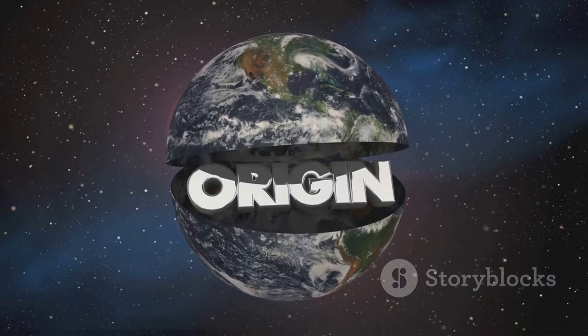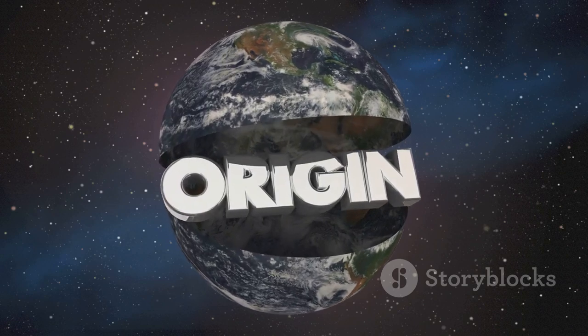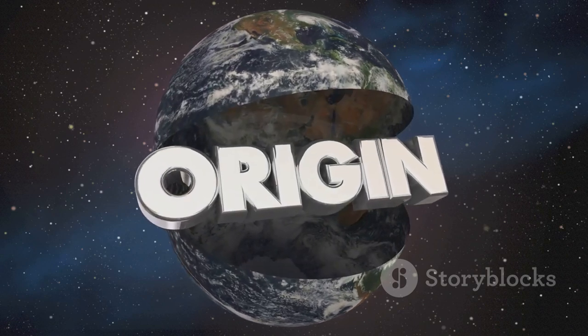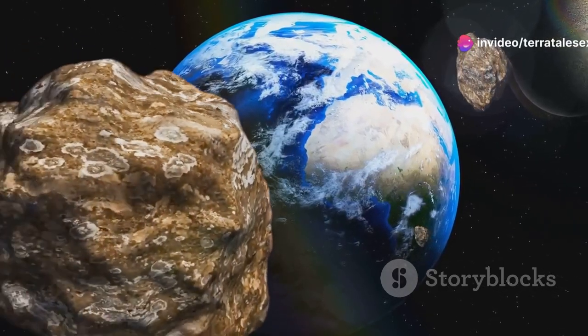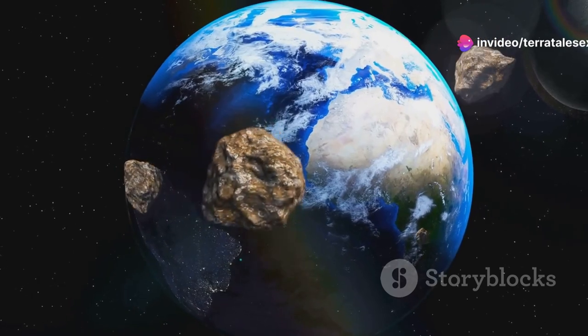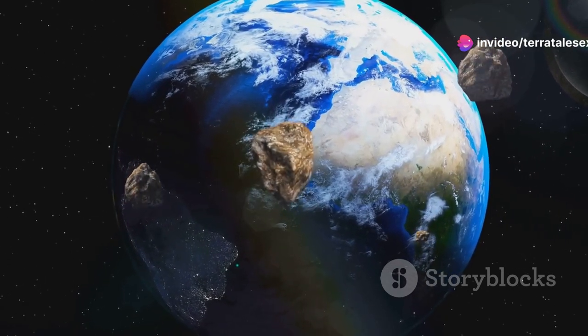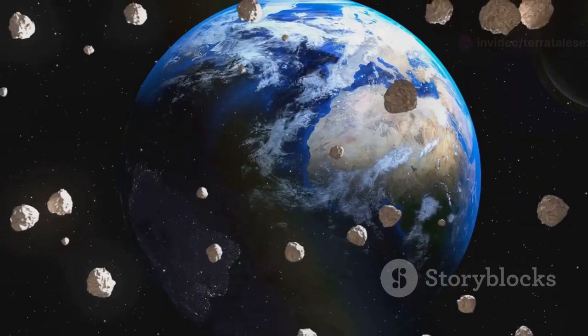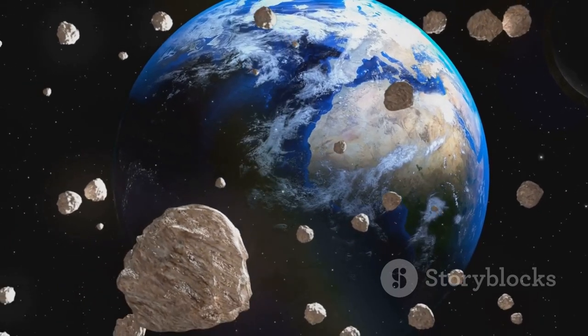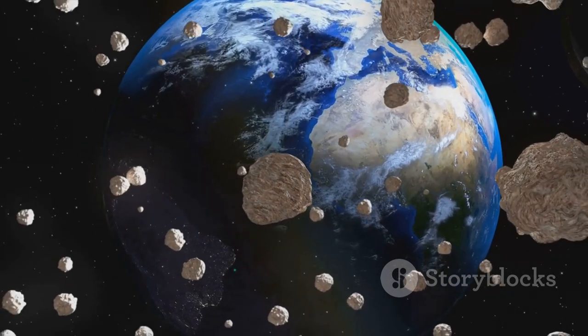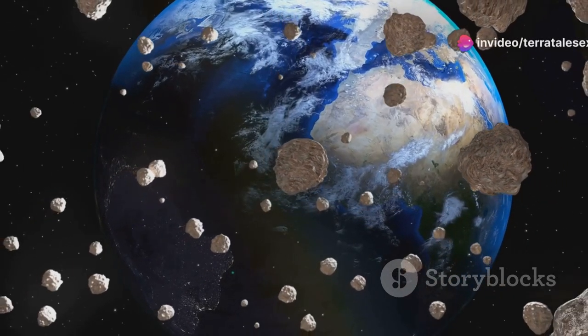This tiny molten ball of rock and metal was just the beginning of a long and tumultuous journey. As this proto-Earth continued to accrete material from the surrounding solar nebula, its size and gravity increased significantly. Each collision and merger with other celestial bodies added to its mass, making it grow larger and more influential in its gravitational pull.